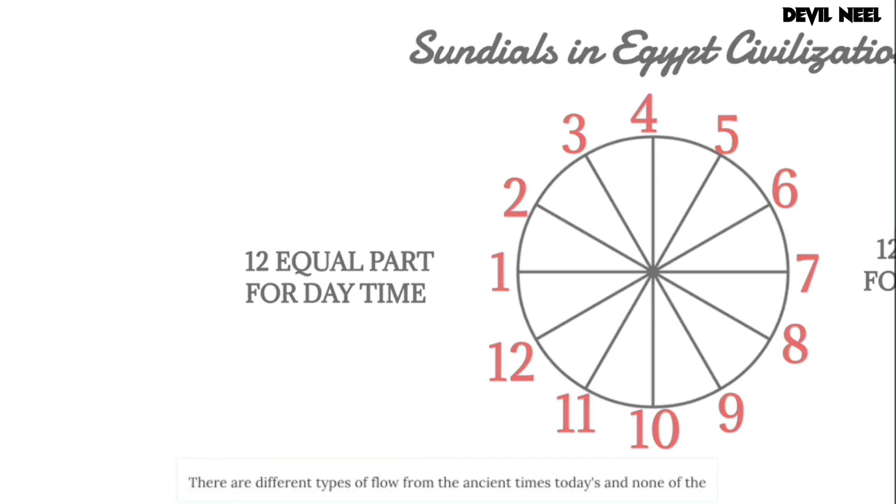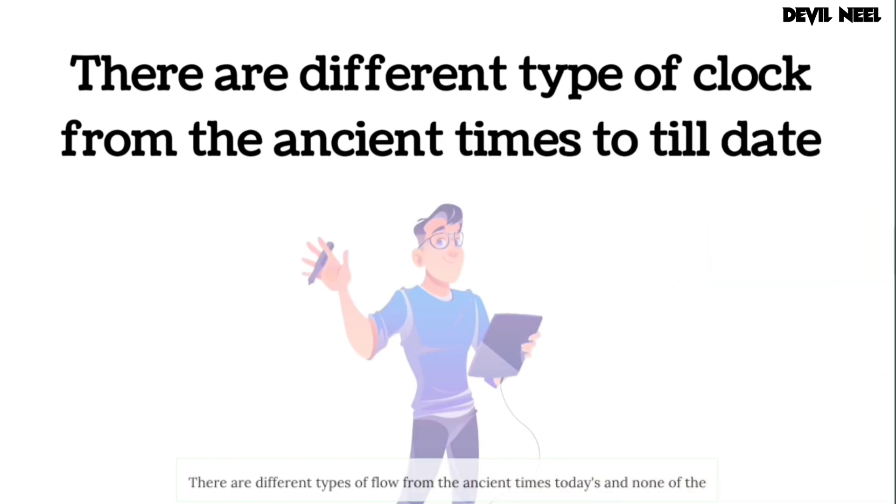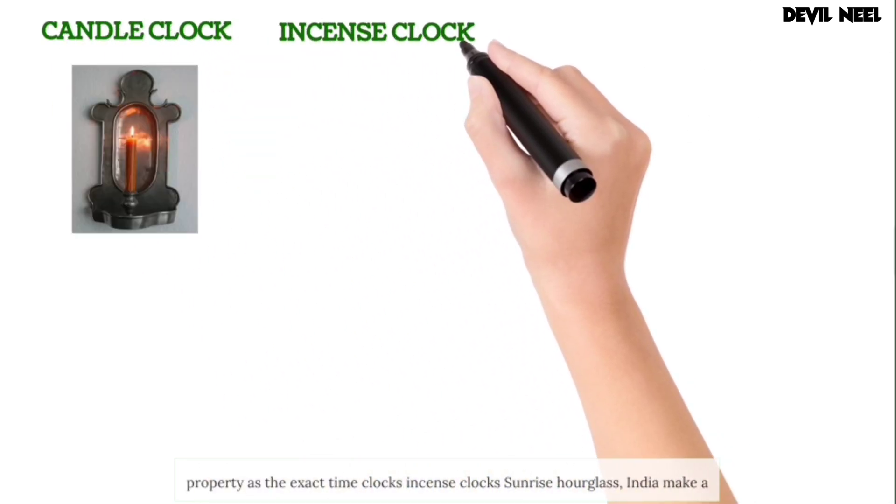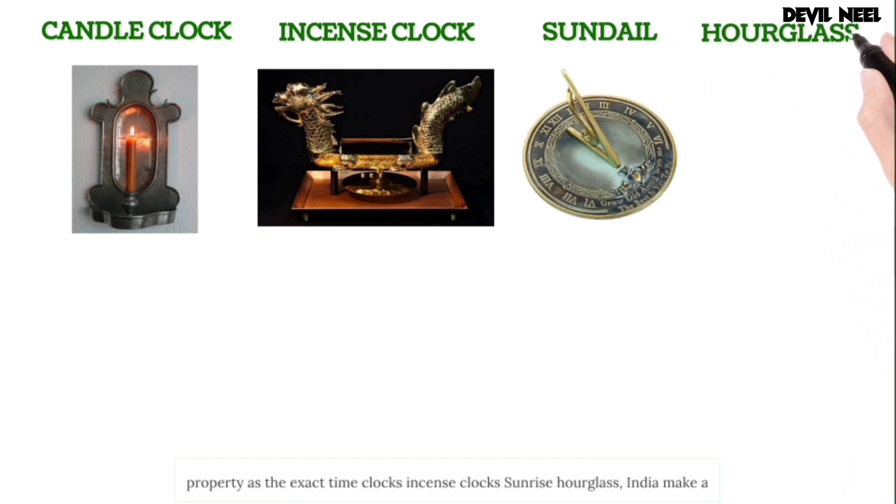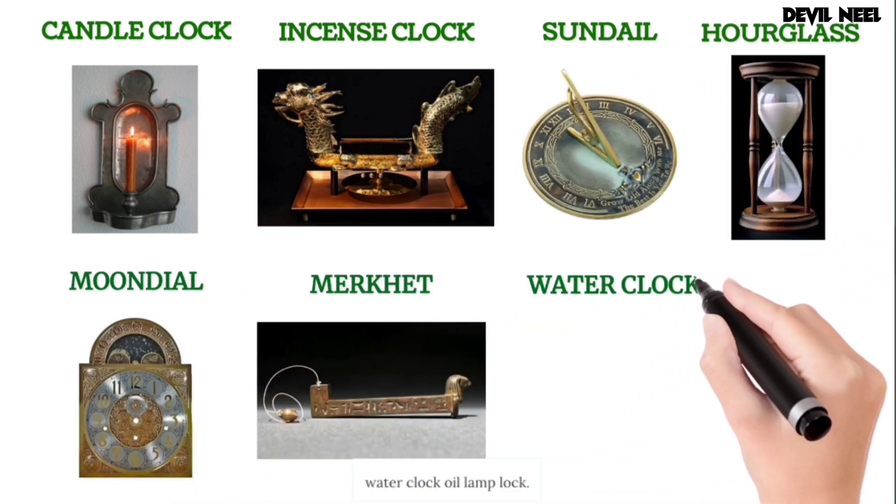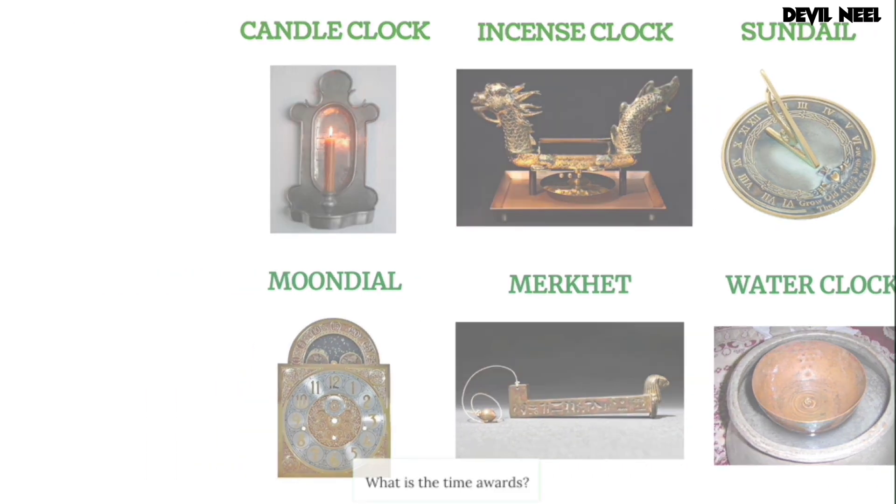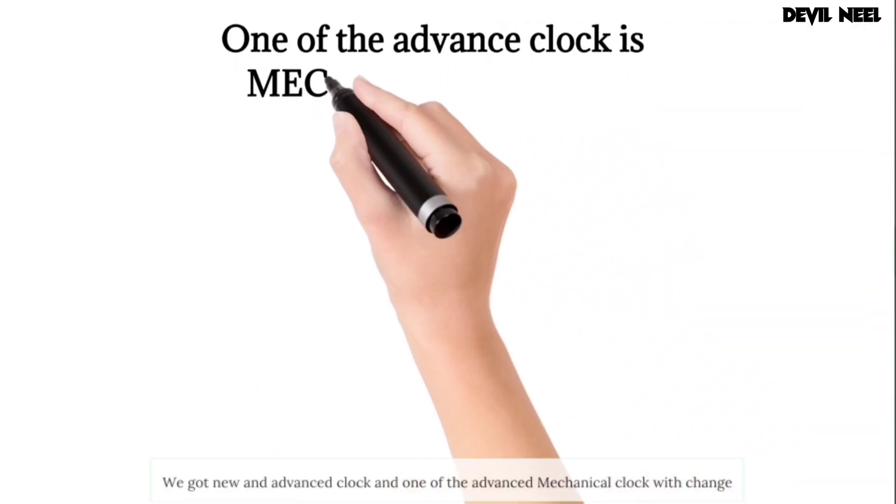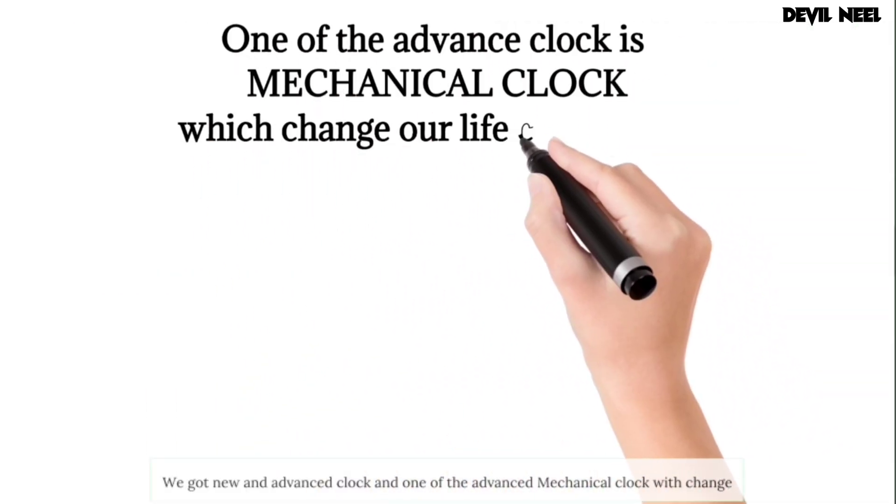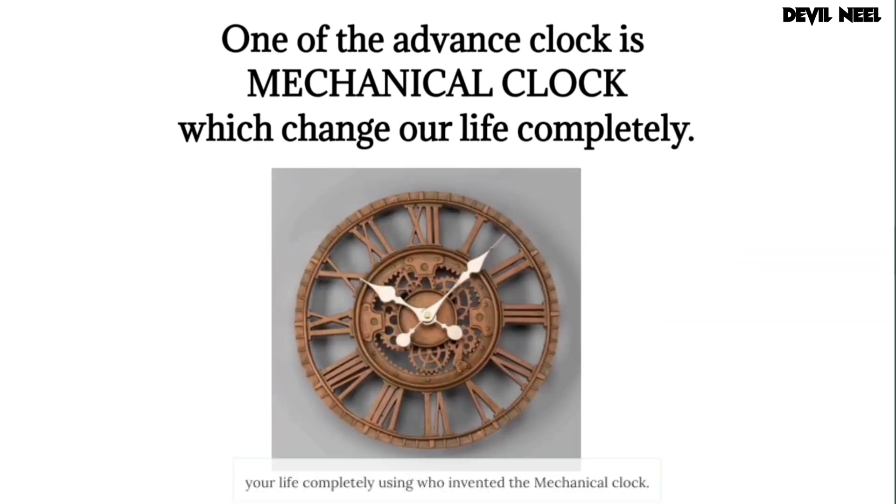There are different types of clocks from the ancient times to till date, and none of the clocks tell us the exact time. Candle clocks, incense clocks, sundials, hourglass, water clock, oil lamp clock. But it's the time of all, we got new and advanced clocks, and one of the advanced clocks is the mechanical clock which changed our life completely.